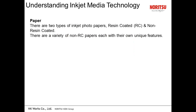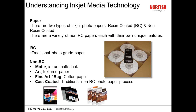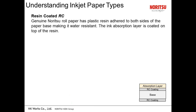There are two types of papers: resin-coated (RC) and non-resin-coated. RC paper is traditional photo-grade paper. Non-RC includes: matte paper for a true matte look; art paper which provides texture; fine art and rag paper which is 100% cotton or has cotton fiber; and cast-coated paper, a traditional look used before RC papers were created.